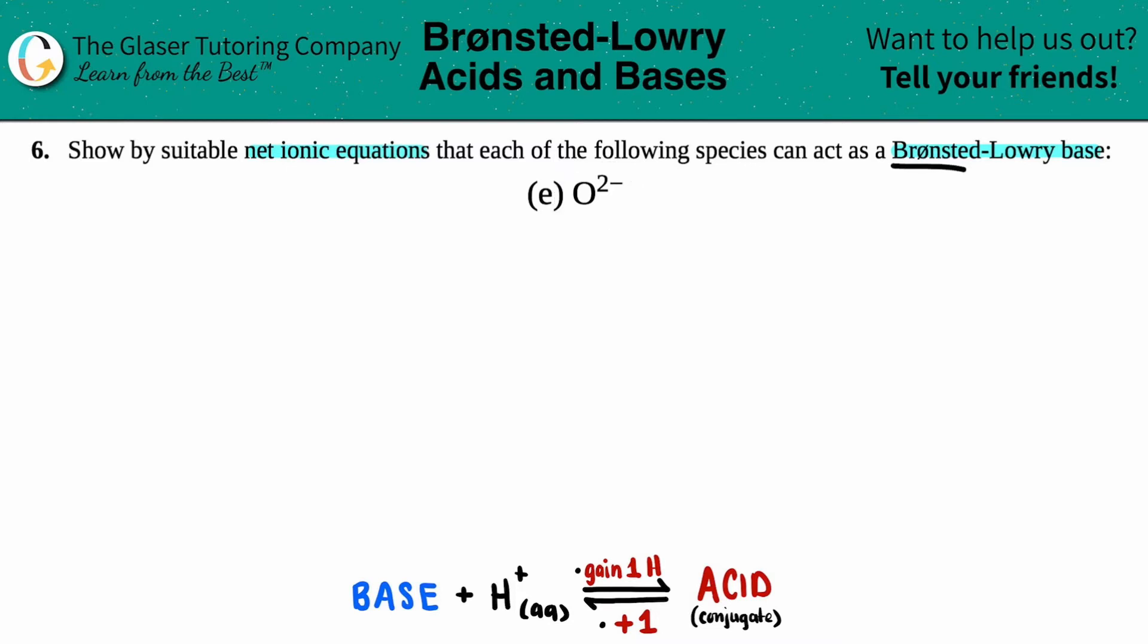Now, side note, Bronsted and Lowry were just names of two scientists that worked independent of each other to come to basically the same conclusion about acids and bases. And in this case, what they noticed that with bases, bases always accepted hydronium ions, which are H pluses.